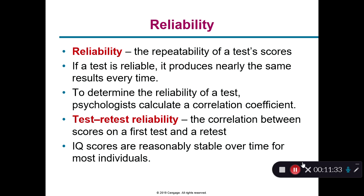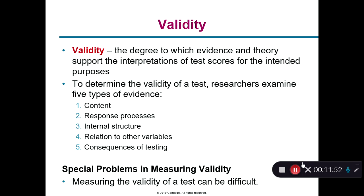Reliability is the idea that somebody can take the test multiple times and still get the same exact score. Test-retest reliability means one person takes it and then takes it again six months later and should get a similar score — that shows the test is reliably measuring things, but it doesn't necessarily say it's valid. For something to be valid, you have to make sure it's actually measuring what it claims to measure. Think of reliability as consistency and validity as accuracy — does the content, responses, structure, and variables actually measure what we want to measure, which is someone's IQ?